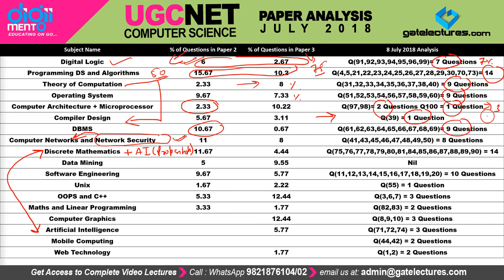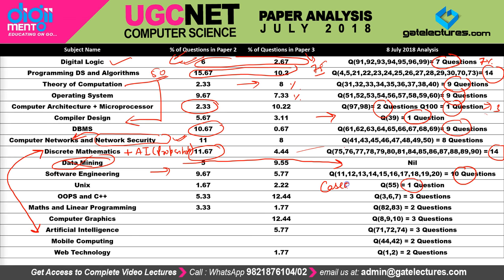In discrete mathematics we got 14 questions — no huge change, totally expected. The only major change is that there were no questions from data mining this year. In software engineering we got around 10 questions — no huge change. In UNIX, one question as expected since it is a case study of operating system. In object-oriented programming including Java, C, and C++, we got three questions from Java. In maths and linear programming, two questions — no huge change.